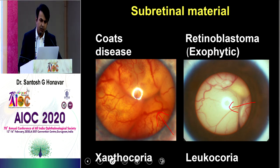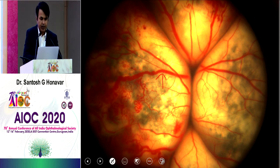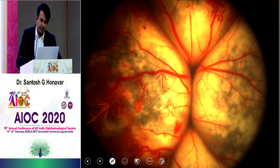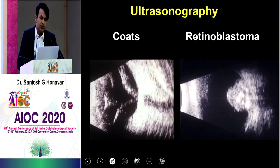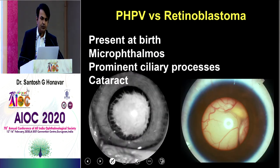When you look at Coats disease patients carefully with indirect ophthalmoscope, you find dilated blood vessels and peripheral retinal telangiectasia — extensive peripheral retinal telangiectasia is a feature of Coats disease. On ultrasound, you don't find a mass in Coats disease; you may find specks of calcification, but there is no mass, whereas in retinoblastoma you will find an obvious mass.